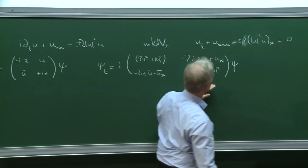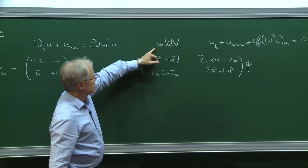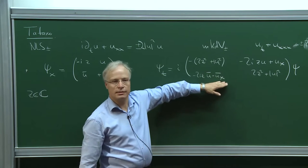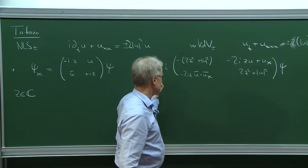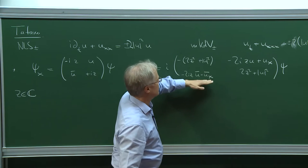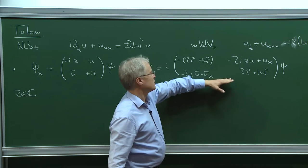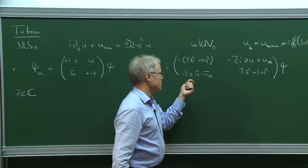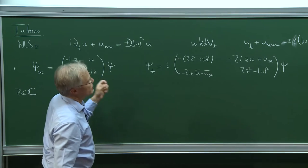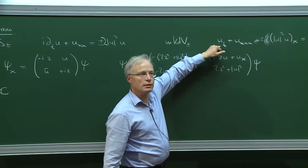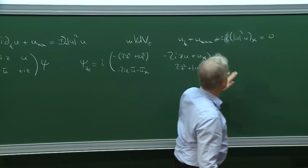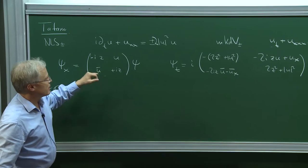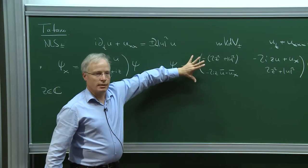The connection to MKdV is the following: for MKdV there's the same spatial operator, and a different time equation, and then the same structure — it's solvable for given data at a point x=0, t=0 for general data if and only if u satisfies the MKdV equation. For the focusing case there are some sign changes which I don't want to go into.